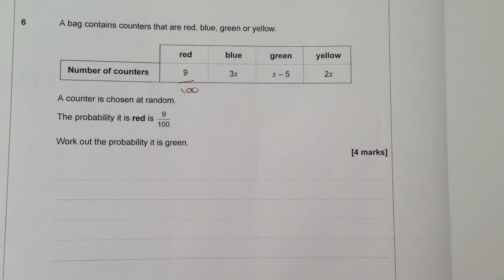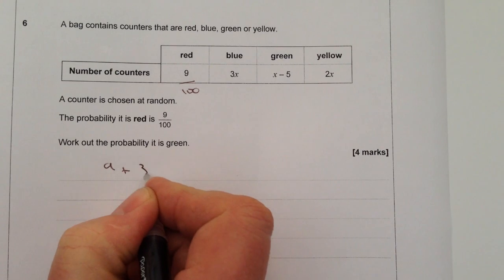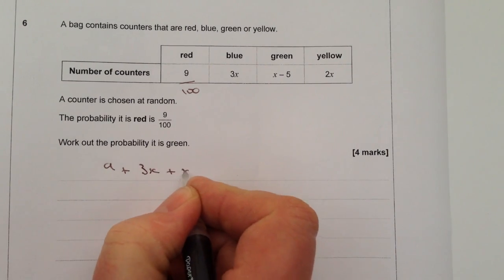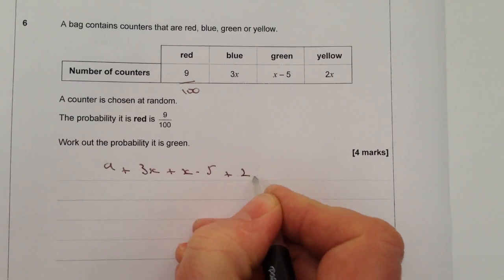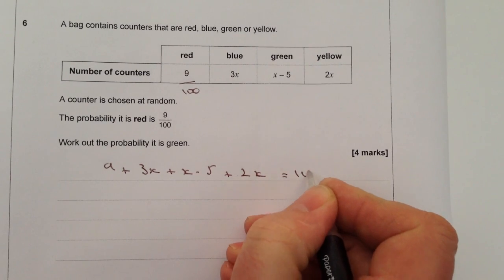So what we're saying is if we add up all the probabilities of red, blue, green, and yellow, that's going to equal 100 counters. So if we go ahead and do that, we end up with 9 plus 3x plus x minus 5 plus 2x, and that equals 100.